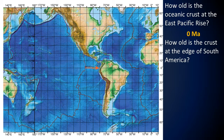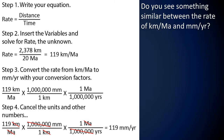How old is the crust at the edge of South America? Along the equator, the oceanic crust at the edge of South America is about 20 million years old — 20 Ma. So Step 1: write your equation — Rate = Distance / Time. Step 2: insert the variables and solve. Rate equals 2,378 kilometers divided by 20 Ma. Dividing that out, we find that our rate is 119 kilometers per million years.